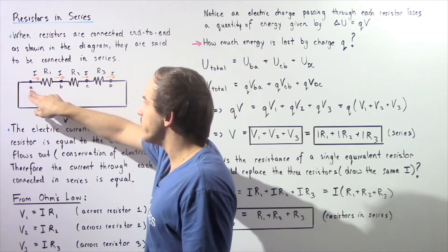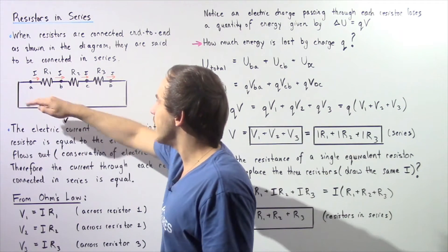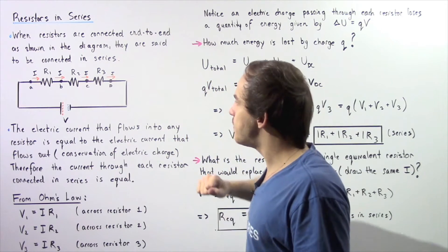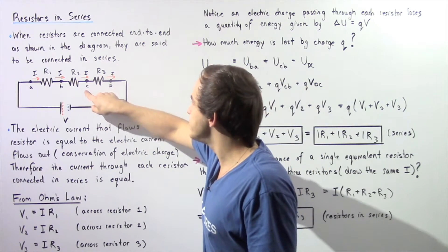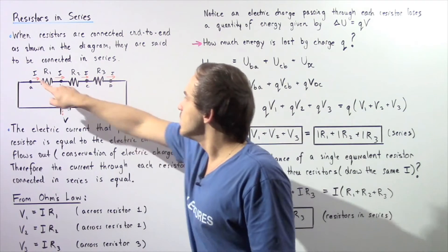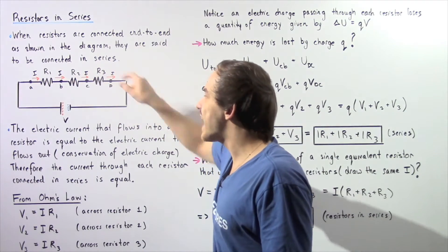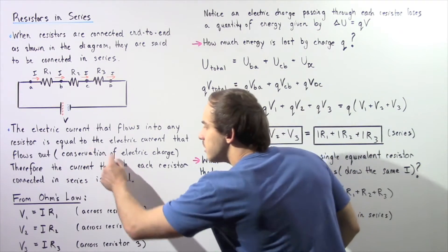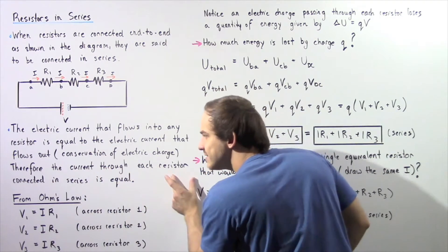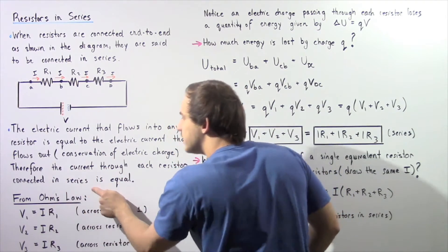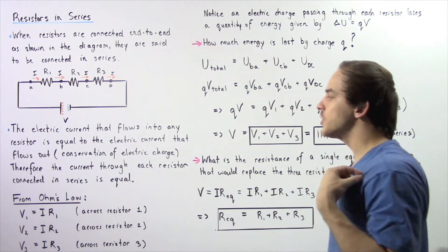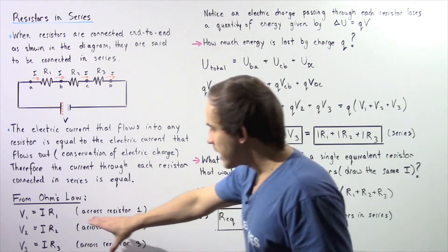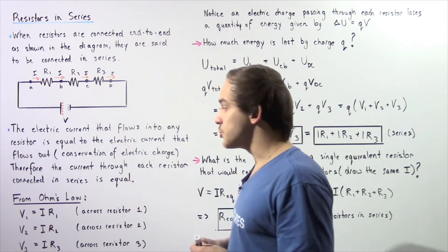The current I going through point A is equal to the I going through point B, and the same exact thing can be said about the I going through point C and through point D. These I's are exactly the same, which implies that the electric current through each resistor connected in series with respect to one another is exactly the same.